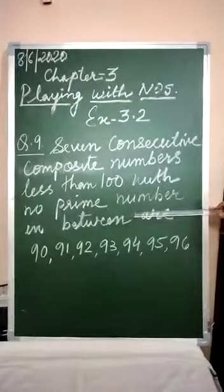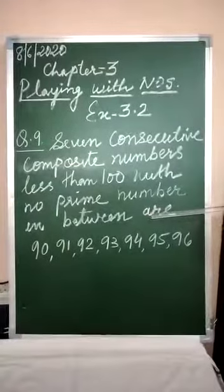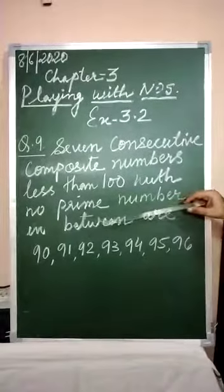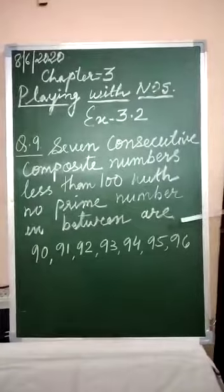Consecutive means here one after another. So if you observe, they are 90, 91, 92, 93, 94, 95, and 96.